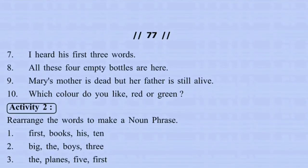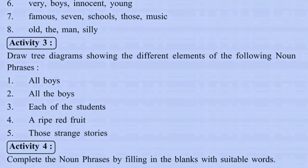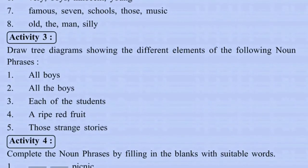Activity Three: Draw three diagrams showing the different elements of the following noun phrases. We have to name the pre-modifiers in each noun phrase given in Activity Three and draw tree diagrams of the noun phrases one by one.